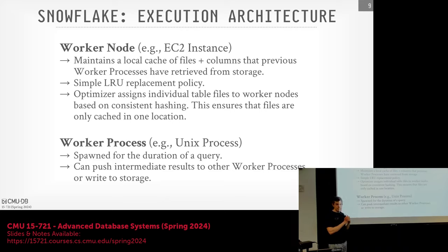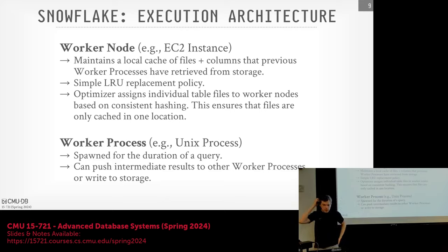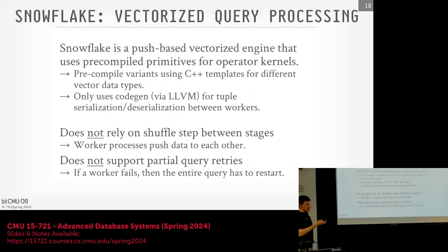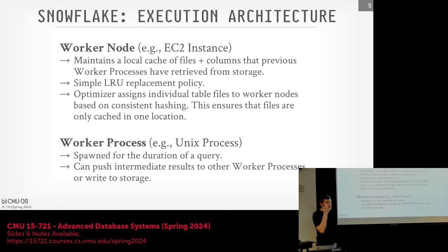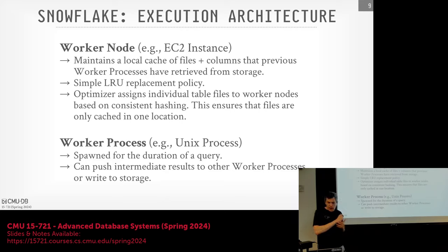A student asks: on EC2 you can have an EBS volume mounted as the root device, so is that not locally connected? Yes, you have to have an AMI image to spin up, but you can also have a locally attached SSD mounted as another filesystem — in 2012 that was available — and that's going to be way faster than EBS. Regarding Kubernetes: I don't know whether they've switched over now, but when we talk about Yellowbrick, they're all-in on Kubernetes, and I assume Snowflake is doing something similar.